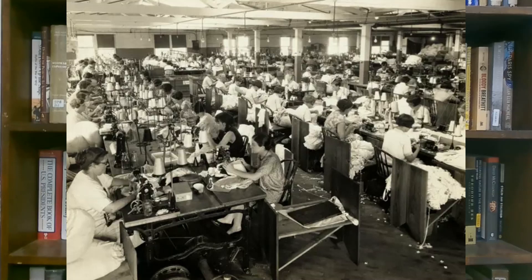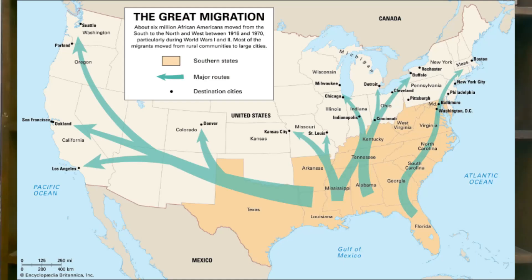The expansion of factories, corporate entities, new machinery, and new techniques such as Henry Ford's assembly line allowed for goods to be produced much cheaper and in much larger quantities. As such, the number of factories and jobs greatly increased, and thousands of immigrants and rural migrants flooded the cities in the 1920s and 1930s.